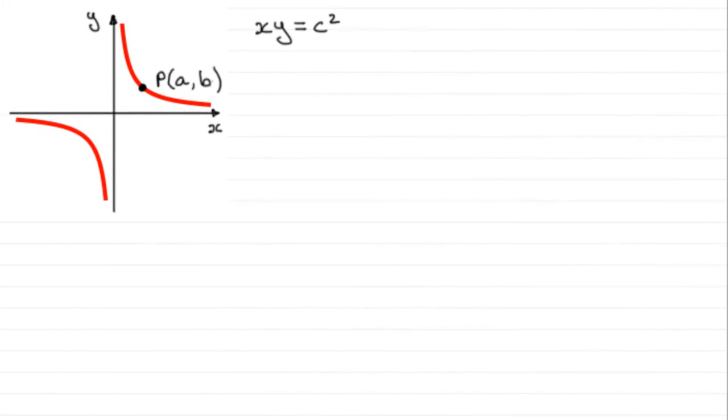Hi, now in this video what I want to do is show you how we can work out the general equation of a tangent and a normal at a point P, let's say it's got coordinates A and B, to a rectangular hyperbola with equation XY equals C squared.